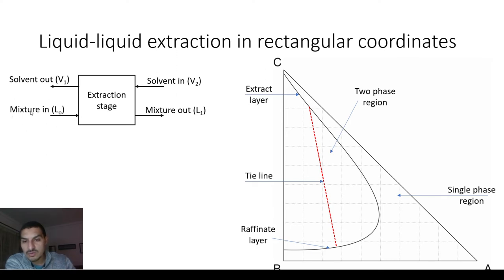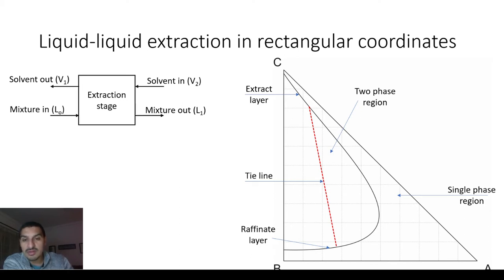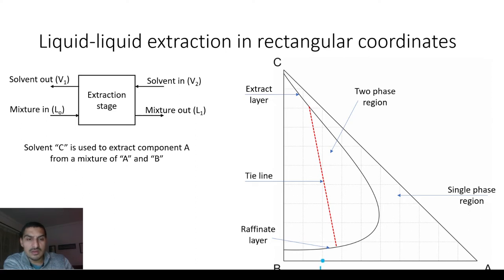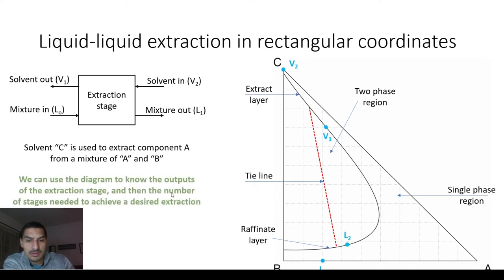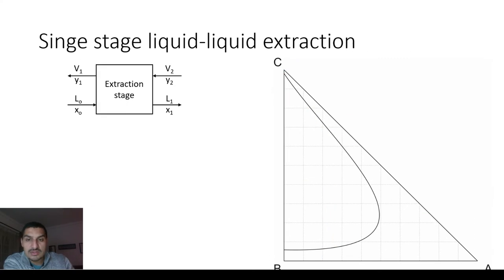For single stage extraction, I have the mixture I want to purify and a solvent V2 to do the separation. There will be two outputs: the solvent after extracting A out of B, and the mixture with a smaller amount of A. The aim is to use the phase diagram to find V1 and L1 as compositions and flow rates. V1 will lie on the extract layer and L1 will lie on the raffinate layer.